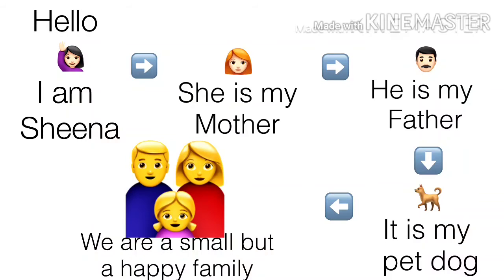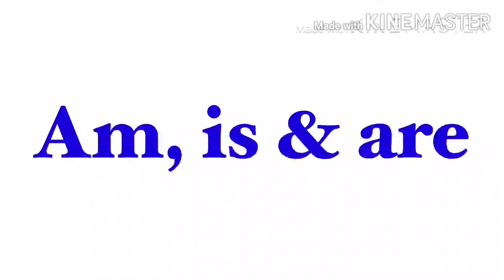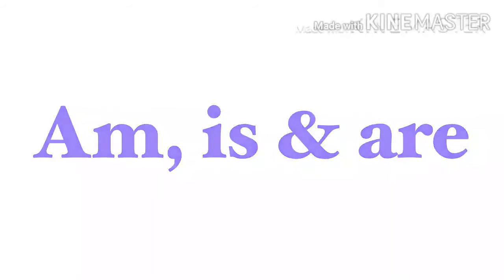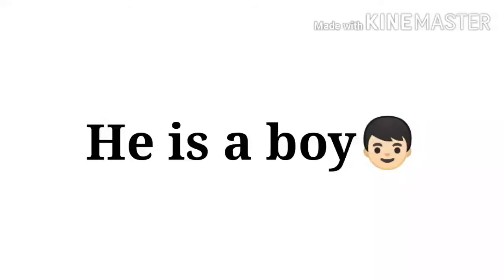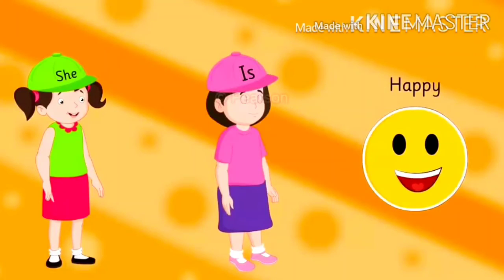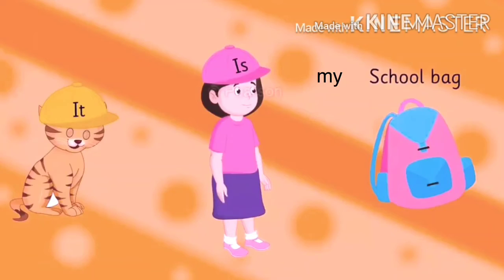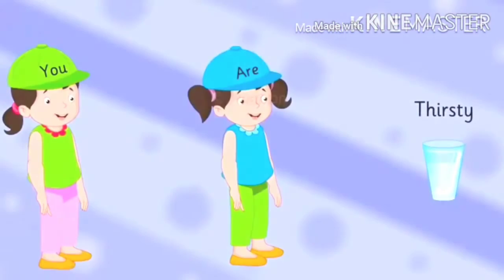So students, did you notice the use of am, is, and are in these sentences? Now we will see some more examples. I am a baby. He is a boy. She is happy. It is my school bag. You are thirsty.